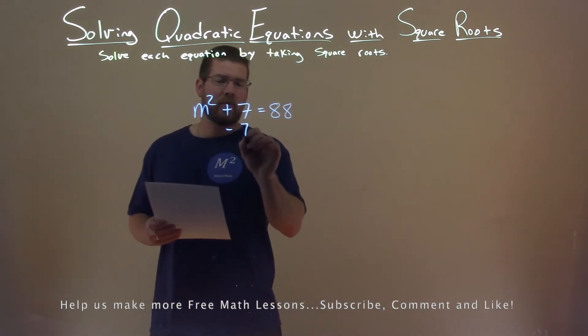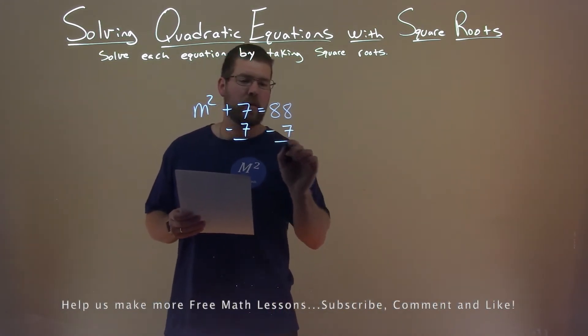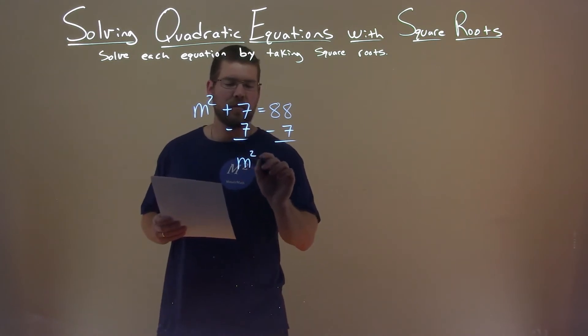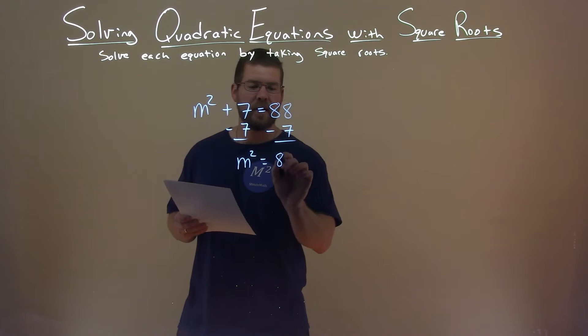First thing I want to do is I'm going to subtract 7 from both sides. That eliminates the 7 on the left, giving me m squared, and 88 minus 7 is 81.